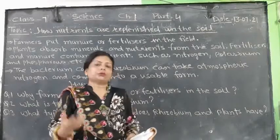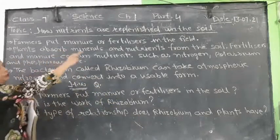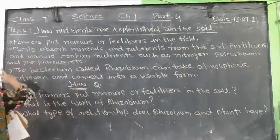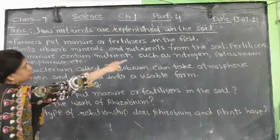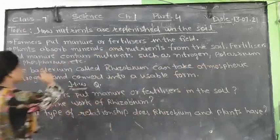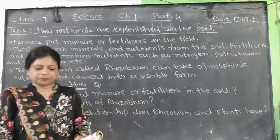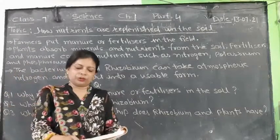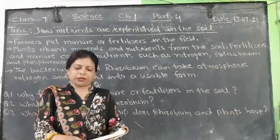So after the nutrients in the soil are used up, we need to provide fertilizers and minerals back into the soil. The amount of nutrients keeps declining, so fertilizers supply nitrogen, potassium, phosphorus, and other nutrients. These nutrients need to be added from time to time to enrich the soil.